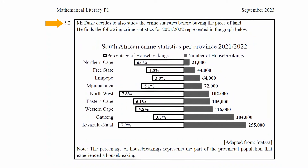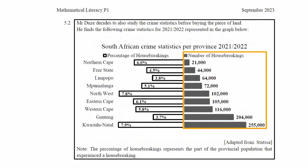Question 5.2 states that Mr. Doosie decides to also study the crime statistics before buying the piece of land. He finds the following crime statistics for 2021-2022 represented in a graph. The stats consist of two horizontal bar graphs: the first shows the percentage of house break-ins, while the second shows the number of house break-ins in each of the nine provinces in South Africa. A note states that the percentage of house break-ins represents the part of the provincial population that experienced a house break-in — meaning 6% of the Northern Cape population experienced a house break-in in 2021-2022.